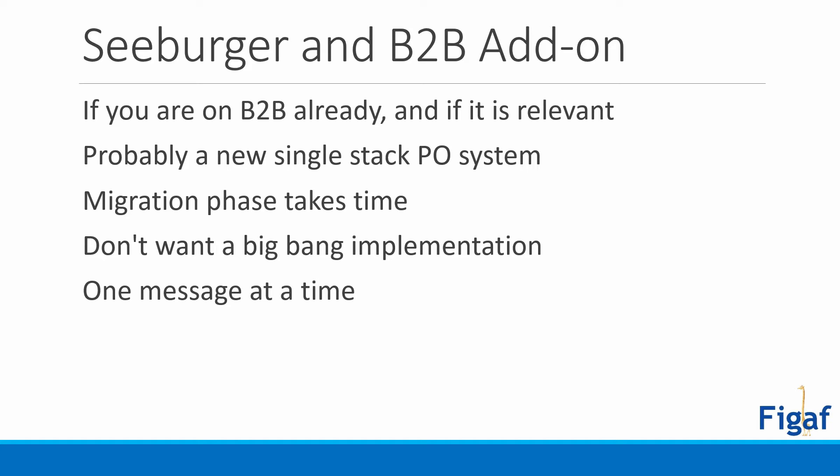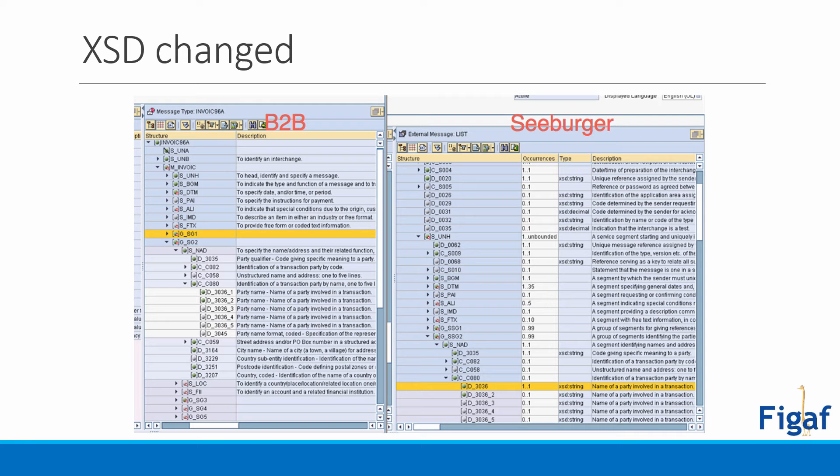If you're moving to the B2B add-on and you're still using zBurger, I envision that you just provision a new PO single stack system where the B2B add-on is included in your license. This type of migration does take quite a lot of time. You need to make sure all the things you have done are still working. You don't want a big bang implementation — you want to test one message for one partner, then test all messages for that partner, and scale from there.